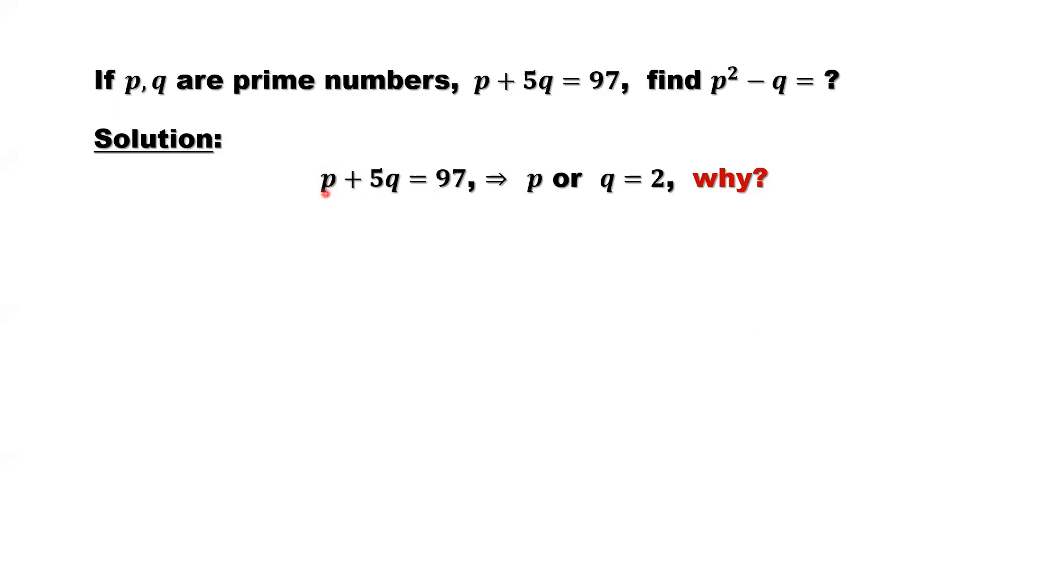So first one, that's p, is an even number. Or second one, 5q is an even number. Because 5 is a prime number, so q is an even number. If 5q is an even number, q must be an even number.